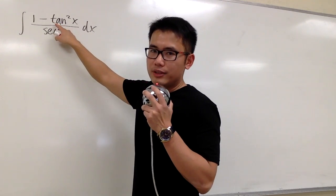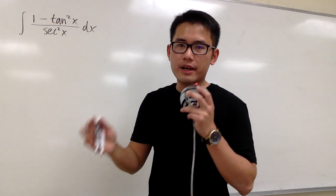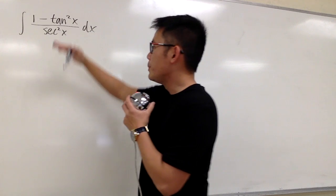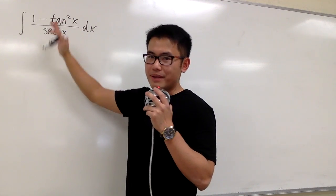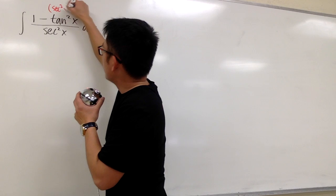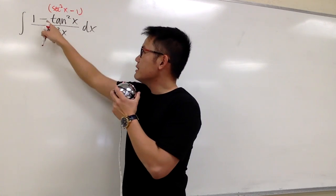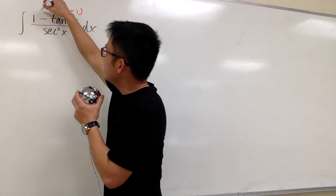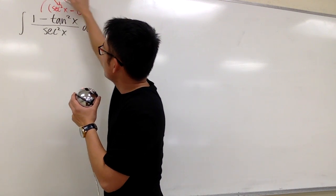I'm going to first change this tangent square x into secant square x minus 1. So that way, we will be working with just secant square. This is the same as secant square x minus 1, and then we have this minus sign in front, so I'm going to take this minus sign and then multiply it into the parentheses.